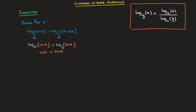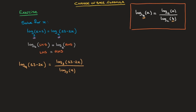To write both sides as logarithms of the same base, we can either change log base 3 into log base 9, or log base 9 into log base 3. Either one will work, but I tend to always write everything in terms of the smallest base, which in this case is 3. So I'll go ahead and write log base 9 of 13 minus 2x in log base 3 using this formula: log base 9 of 13 minus 2x equals log base 3 of 13 minus 2x divided by log base 3 of 9, where the 9 inside this log base 3 is the base of the logarithm we started with.